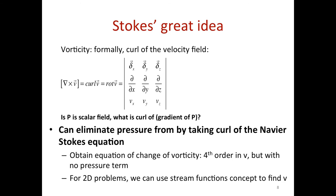Mathematically that's what vorticity looks like, but I'm trying to build some physical feeling for it too. Consider a small paddle wheel placed at a point in the velocity field. If the velocity field would rotate that wheel, then vorticity is non-zero there. In one of the shown examples, arrows in opposite directions cancel and the wheel wouldn't spin — that's zero vorticity. In the other cases, the asymmetry would rotate the wheel — non-zero vorticity. Just imagine a little paddle wheel and ask: would this velocity field rotate it or not?